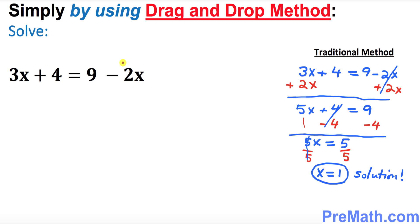What we want to do is move x's on one side and these constants on the other side. So I'm gonna move this -2x on the left-hand side. I'm gonna drag and move it on the left-hand side. And I want to move this positive 4 on the right-hand side. So always remember this is what we will be doing.